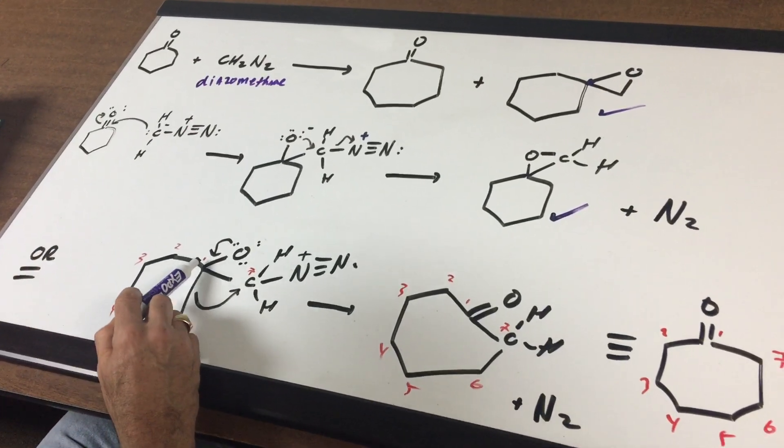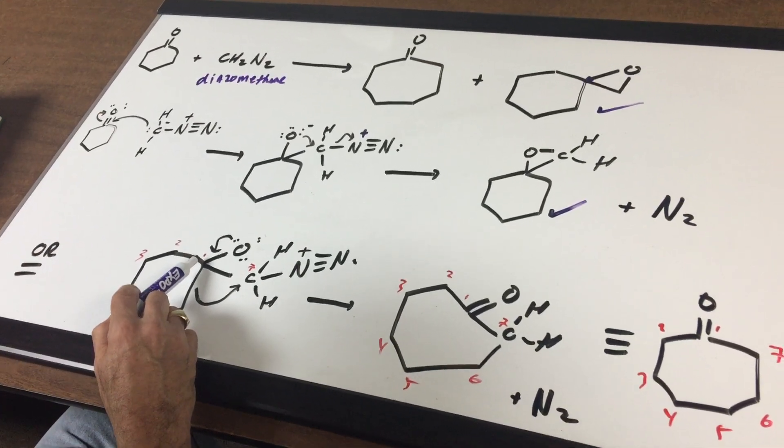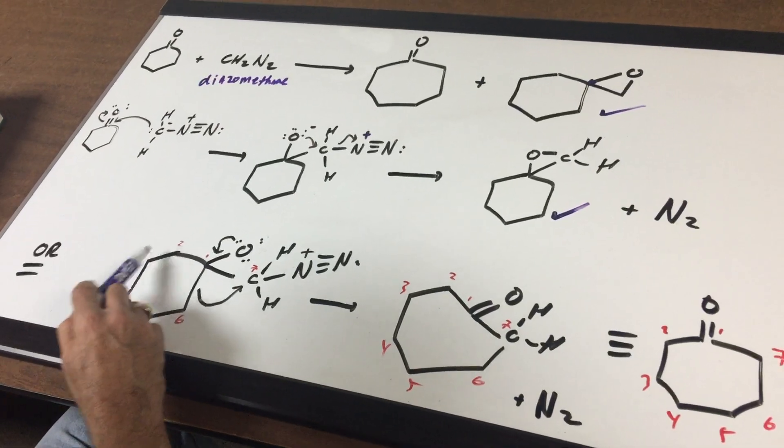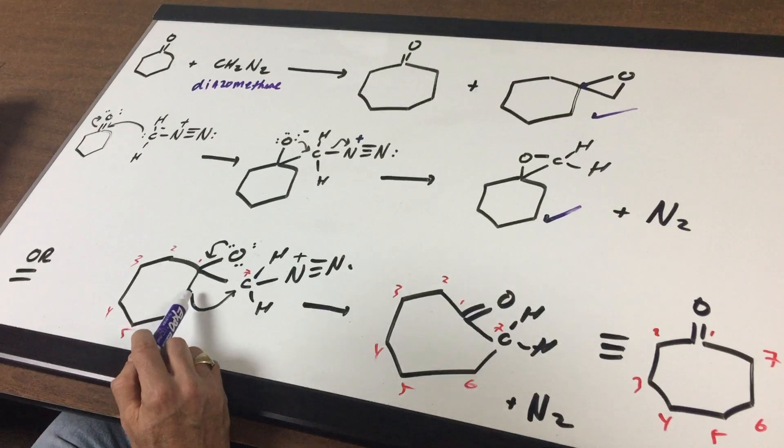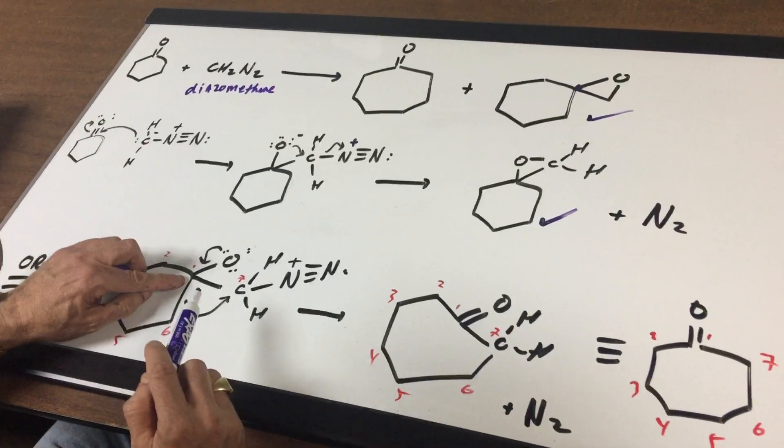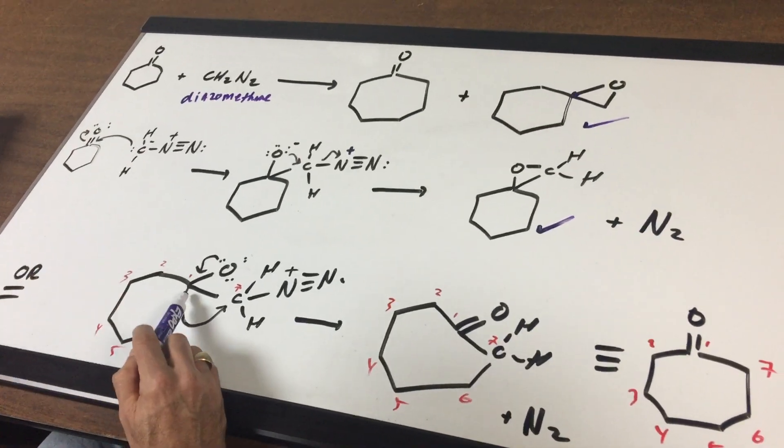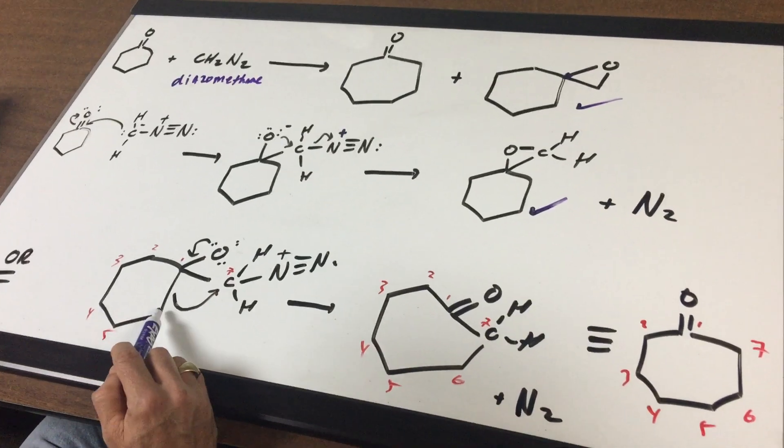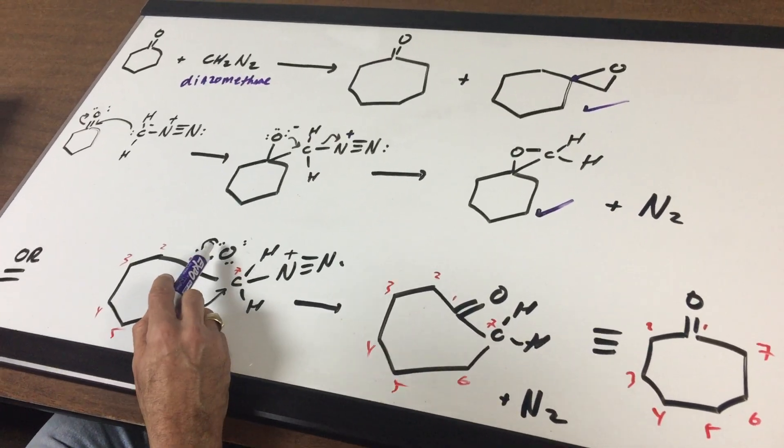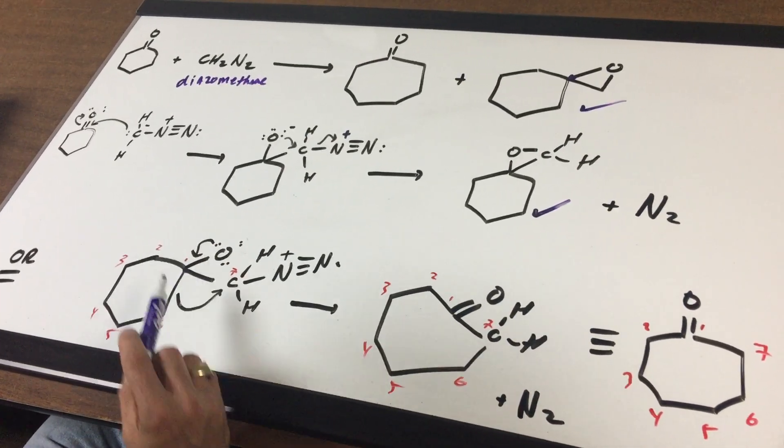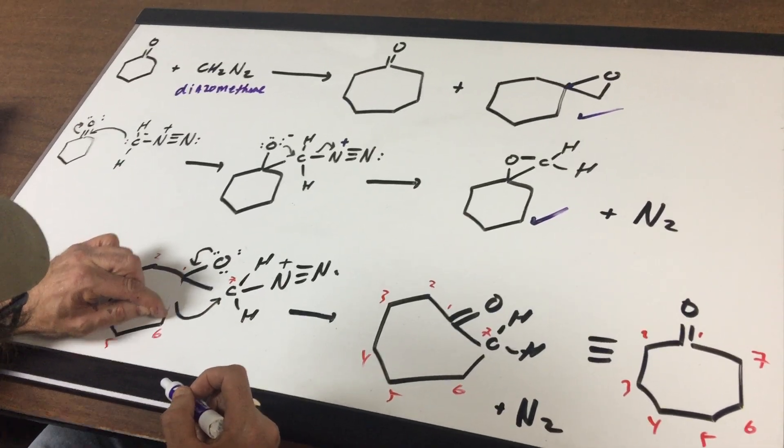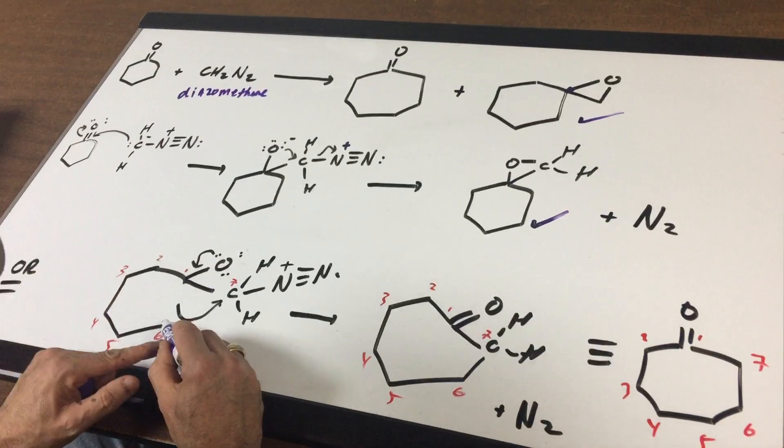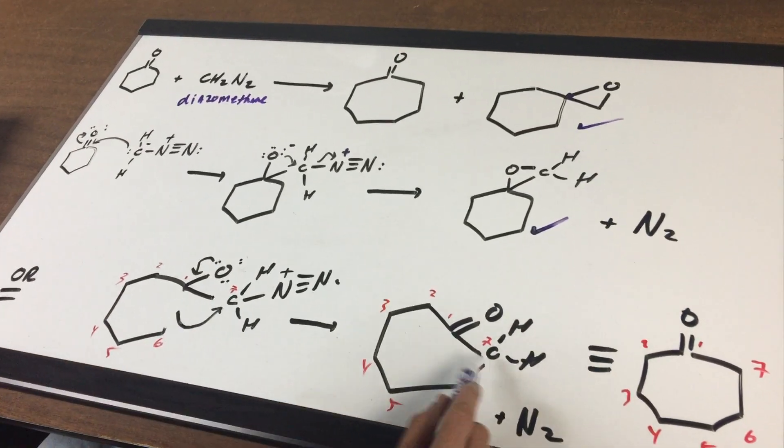Now, what I'm going to do is number the carbons so nobody gets lost. So one, two, three, four, five, six, and seven. What I'm going to do is break one six. I'm going to break the one six bond, and I'm going to connect six to seven and move the carbonyl down. Now, watch my fingers. If I did that, broke this bond and move that to here, that would give me this.